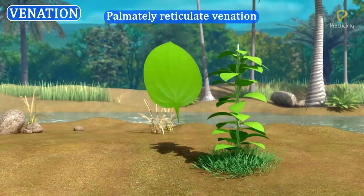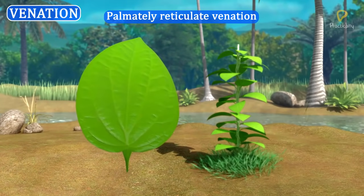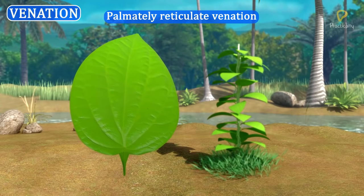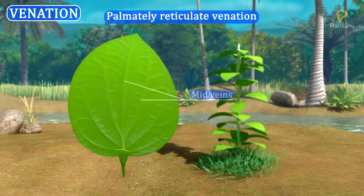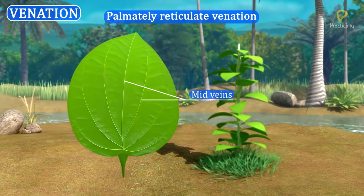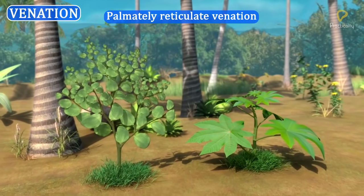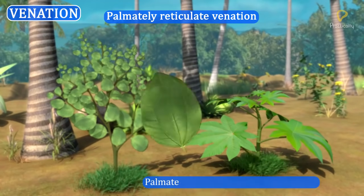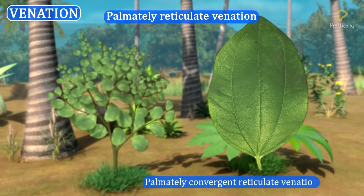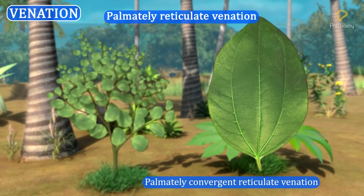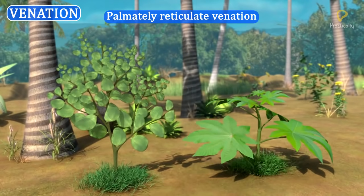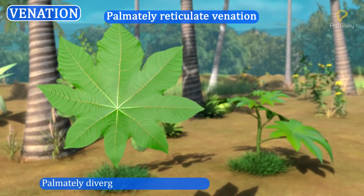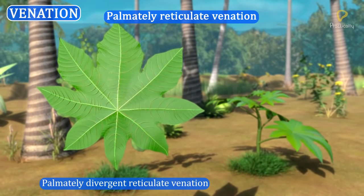Palmate reticulate venation: In this venation, a leaf has two or more mid-veins. It is of two kinds: palmate convergent reticulate venation and palmate divergent reticulate venation.